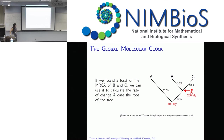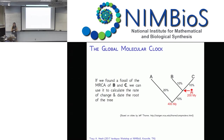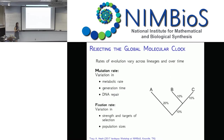With two things - a known substitution rate and the assumption of constant rates - we can date nodes in the tree. Alternatively, if we don't know the substitution rate but we find a fossil representing the most recent common ancestor of two taxa, and we continue to make the constant rate assumption, we can use the age of that internal node to date the root of the tree.